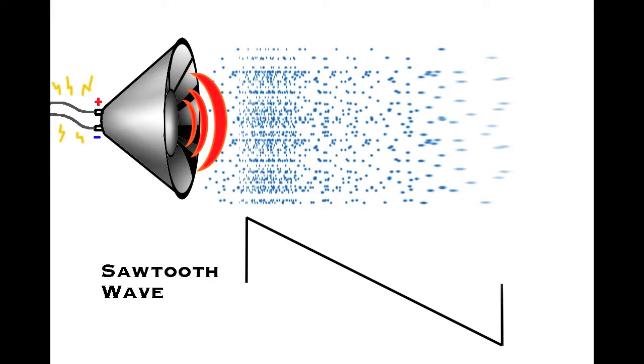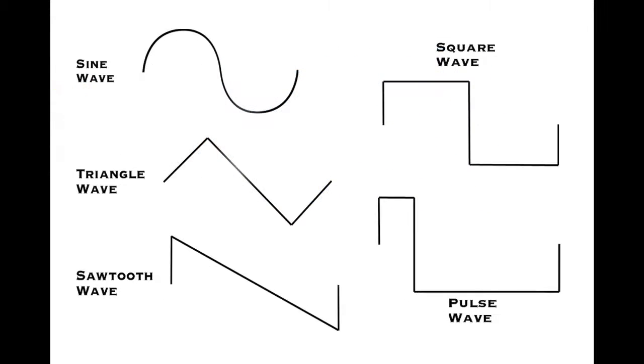Great. Now just to wrap this part up, here are the five basic waveforms for you. The sine, the triangle, the sawtooth, the square, and the closely related pulse wave.